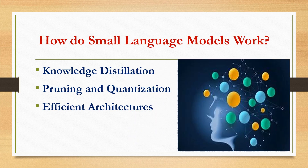So how do small language models work? Like LLMs, SLMs are trained on massive datasets of text and code. However, several techniques are employed to achieve smaller size and efficiency. The first technique is knowledge distillation, which involves transferring knowledge from a pre-trained LLM to a smaller model, capturing its core capabilities without the full complexity.